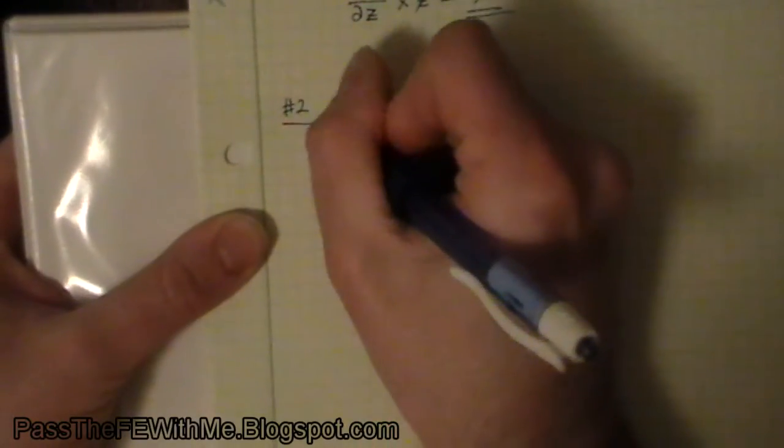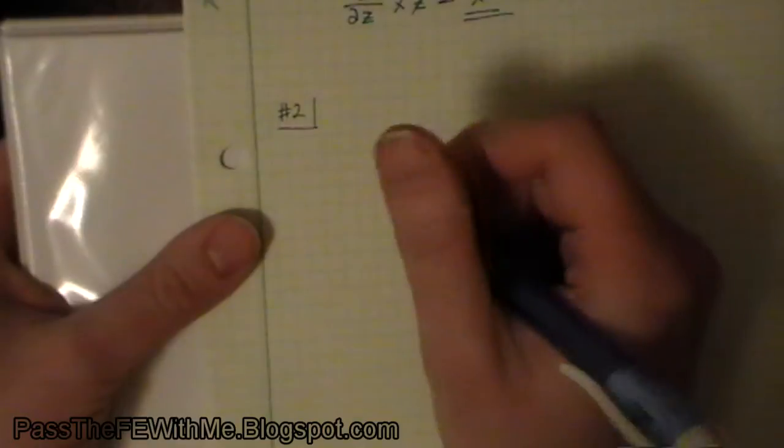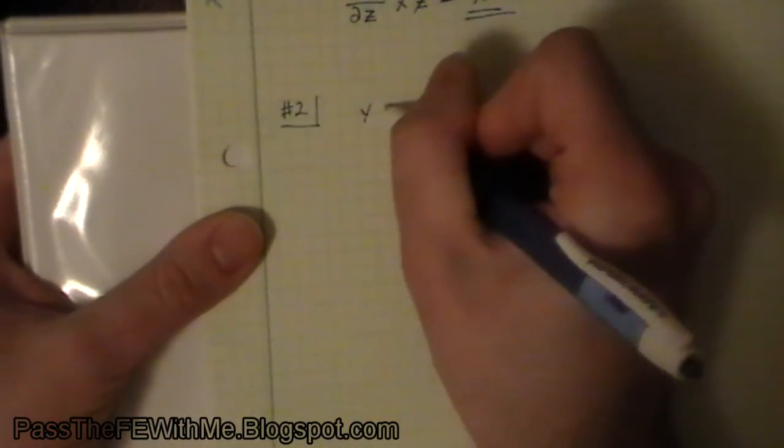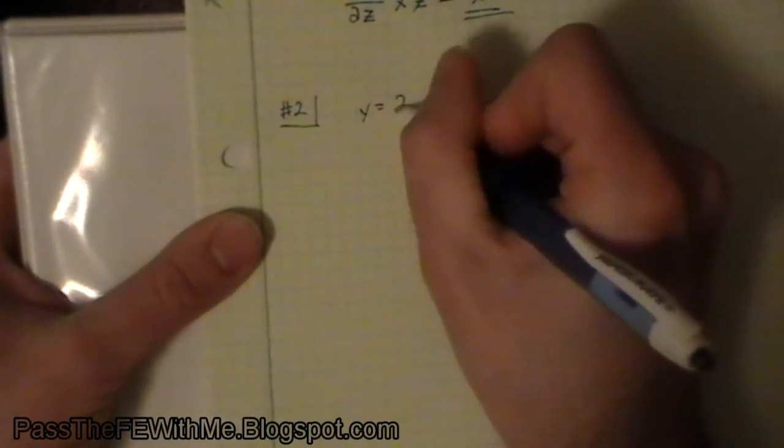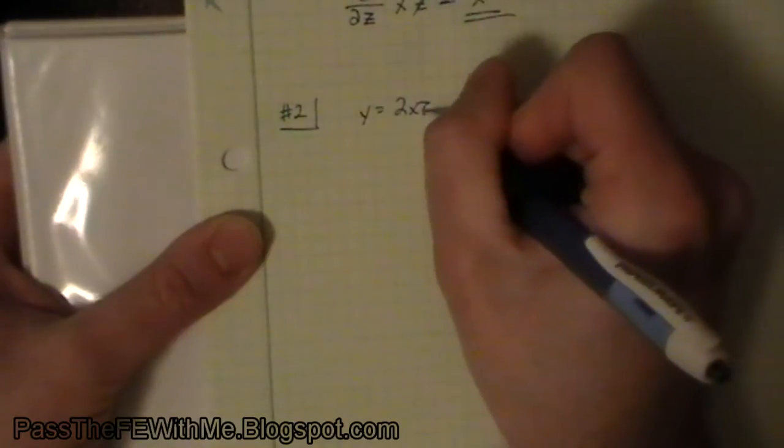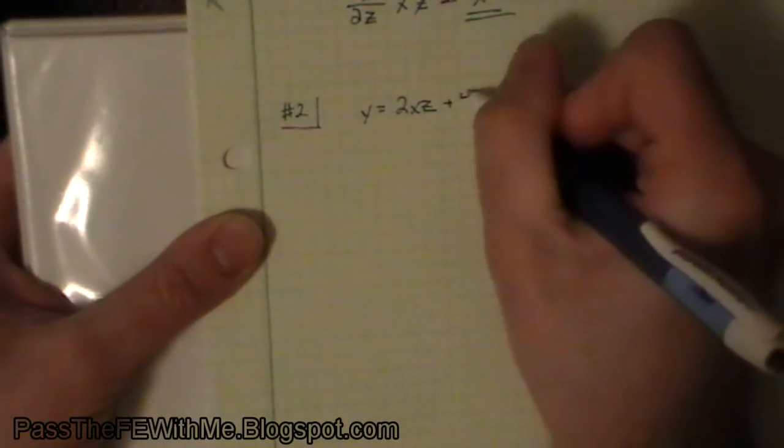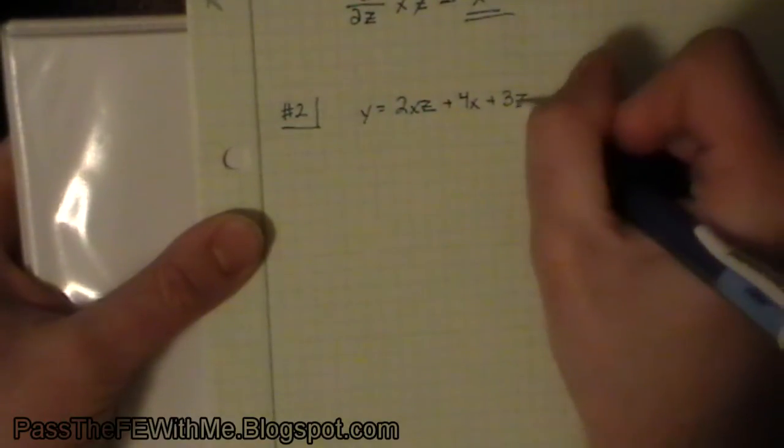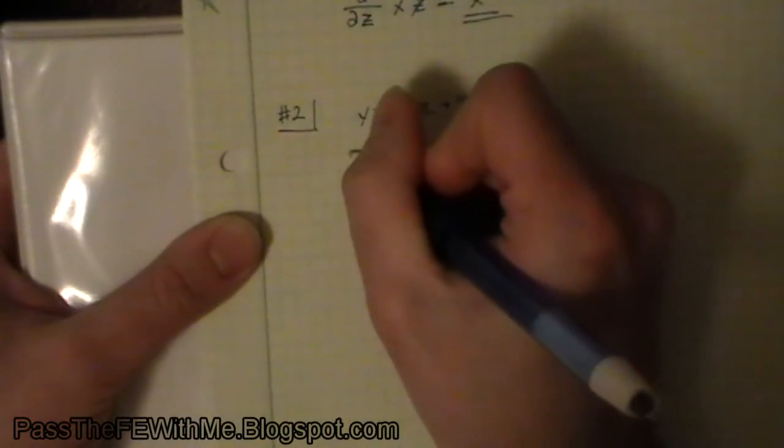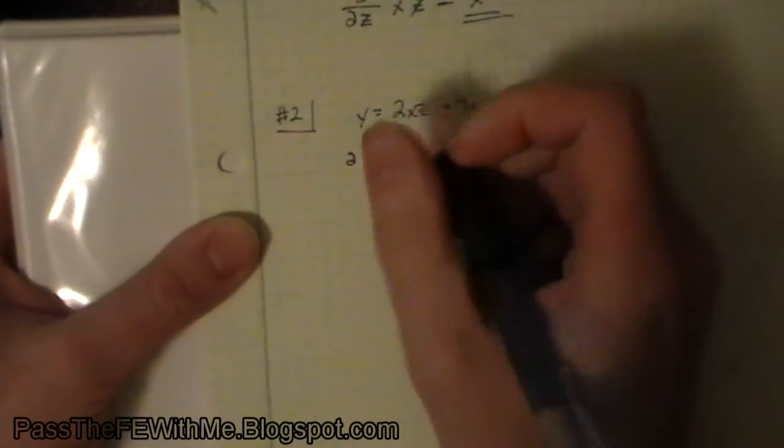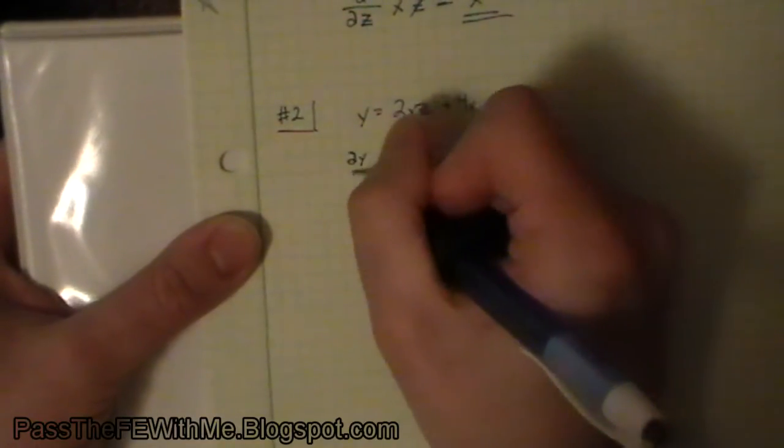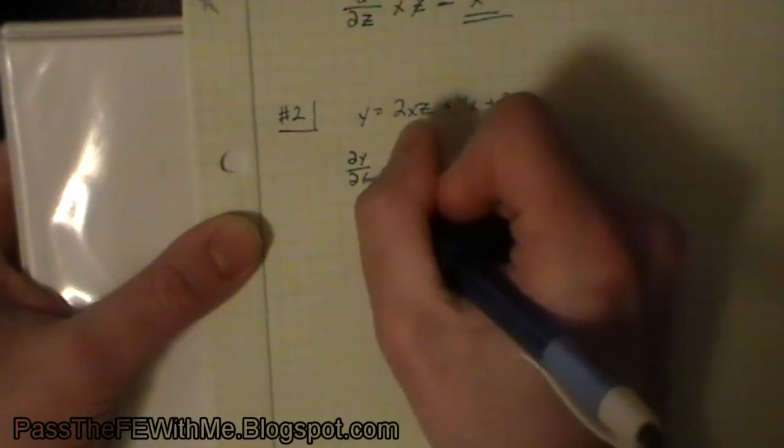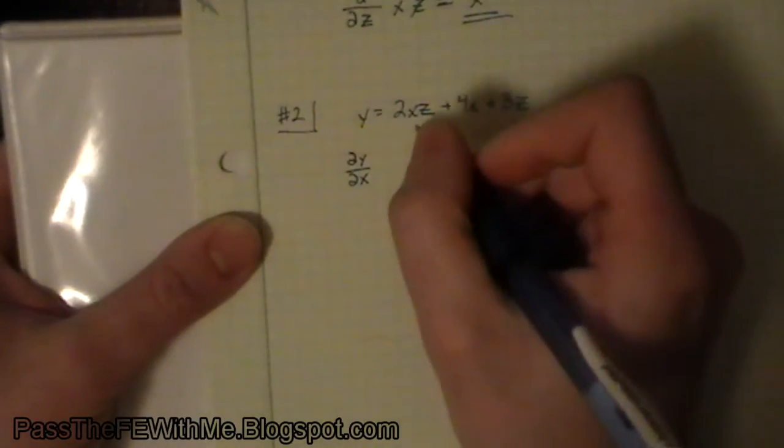Let's do another example. This one we're going to involve a little bit more. Let's say y equals 2xz plus 4x plus 3z. Now let's find dy/dx, the partial derivative of y with respect to x.